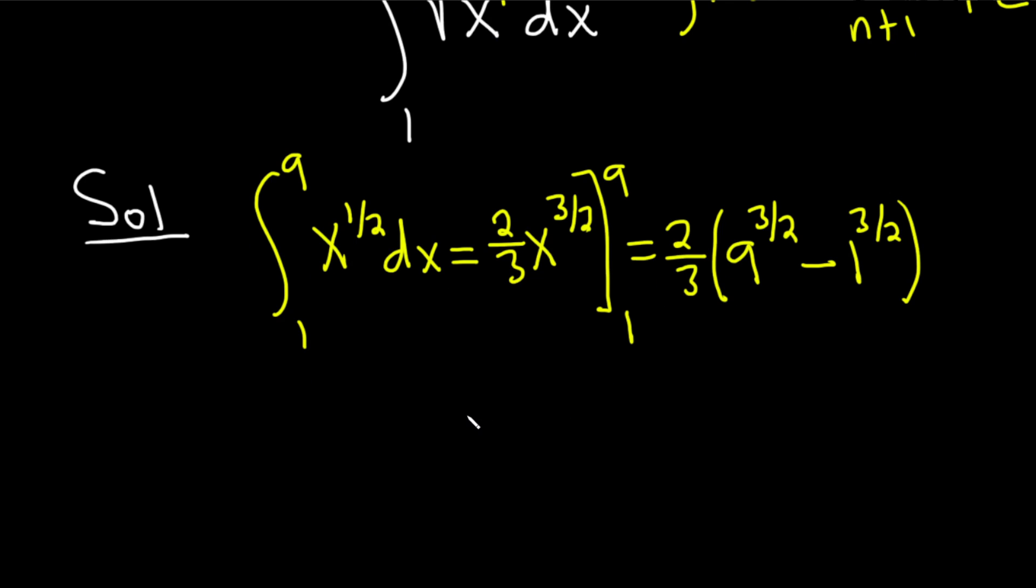So this is equal to 2 thirds, 9 to the 3 halves. Let's go over here and work that out. So if you have 9 to the 3 halves, that's really the square root of 9 because the 2 goes in the little pocket always. And then you can put the 3 wherever you want.